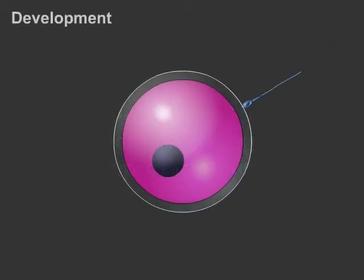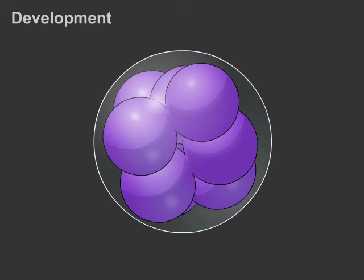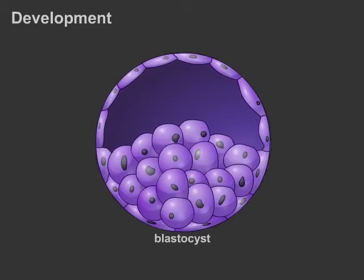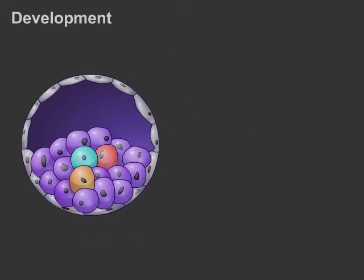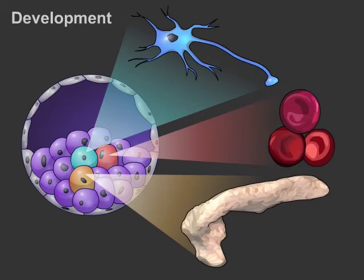Mammalian development begins with a fusion of egg and sperm to form a single cell embryo called the zygote. As an embryo develops into an adult organism, cells become committed to specific cell fates. Cells in the inner cell mass of the blastocyst are pluripotent, meaning that they can give rise to all cell types in an organism, including neurons, red blood cells, and pancreatic cells.